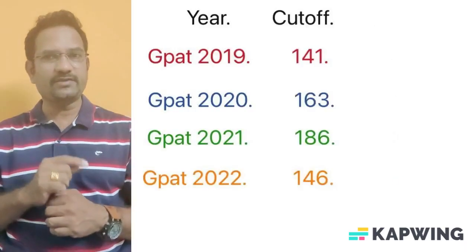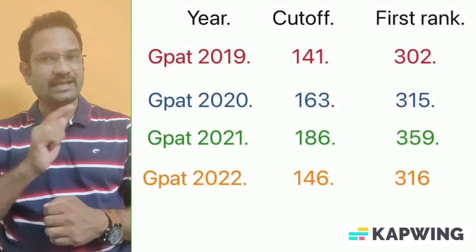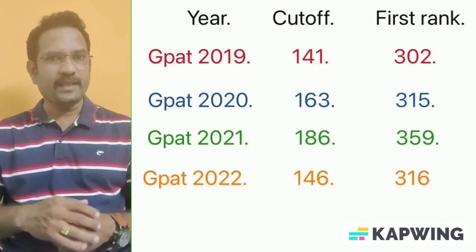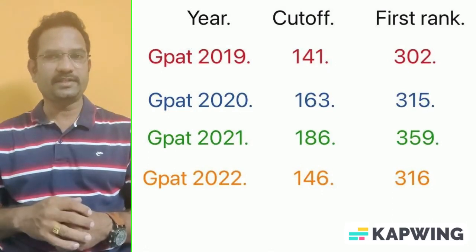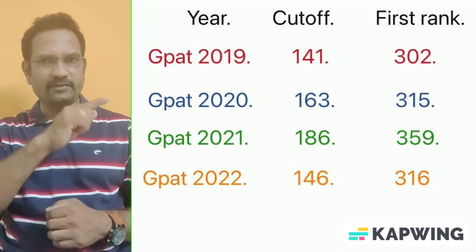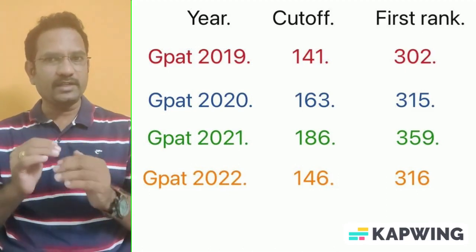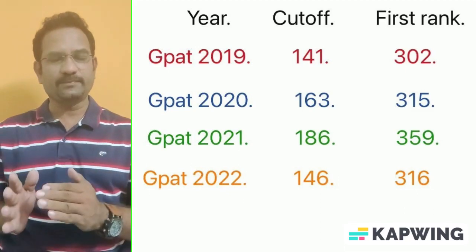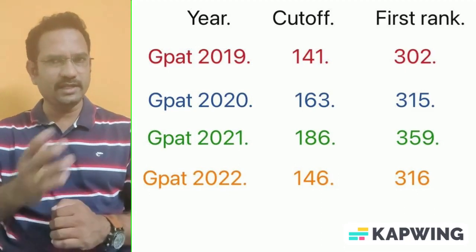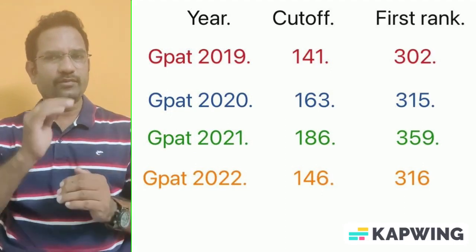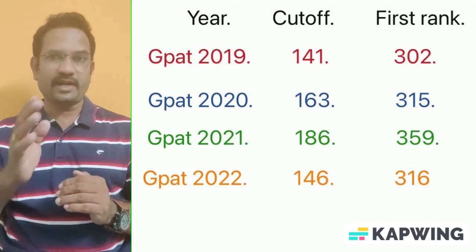Here I have given the statistics from 2019 till 2022 — the cutoff marks for the open category and the top marks in each year. If you observe the pattern from 2019 to 2022, the cutoff mark is between 140 to 160. Only one year it is an outlier at 186, but mostly it is between 140 to 160 out of 500 marks.